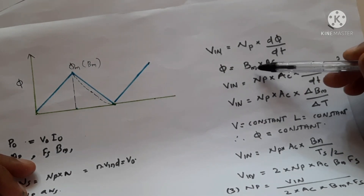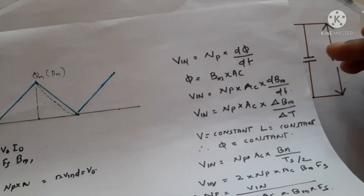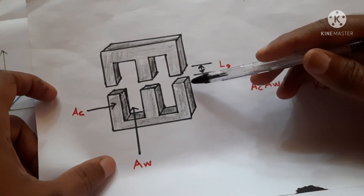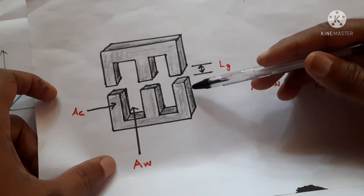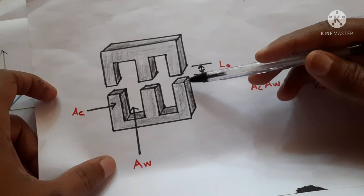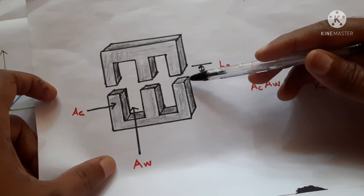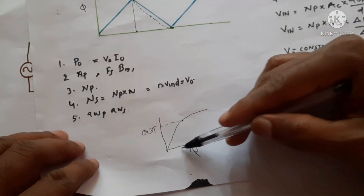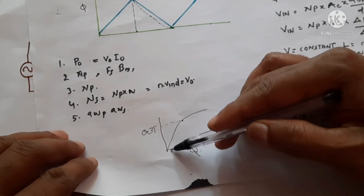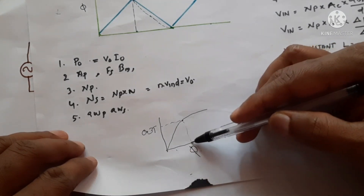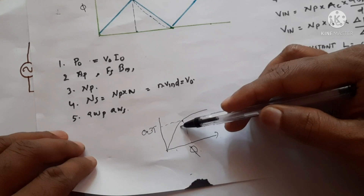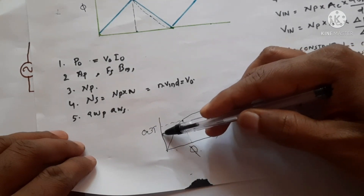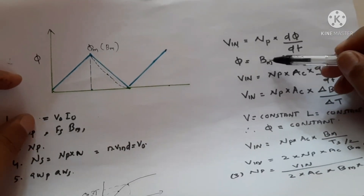Bm is the maximum flux density that the core can handle. If we use ferrite as the core material for high frequencies, it has a flux density of 0.2 tesla, and its maximum flux density is around 0.3 tesla. We use a value around 0.2 tesla so the core does not become fully saturated.